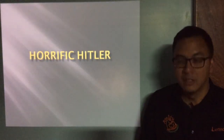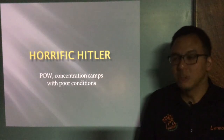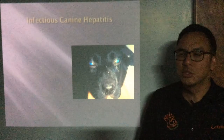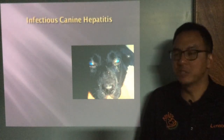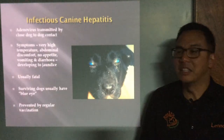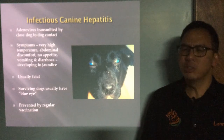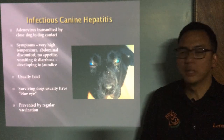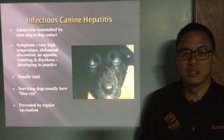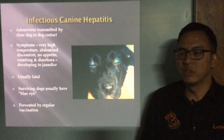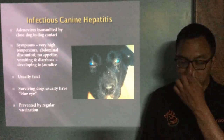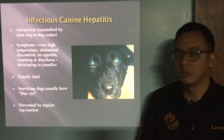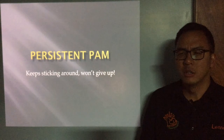Horrific Hitler — imagine prisoners of war in poor conditions. We're talking about infectious canine hepatitis. Hepatitis means inflammation of the liver, and it's an adenovirus transmitted by close contact. Symptoms include very high temperature, abdominal discomfort, no appetite, vomiting and diarrhea, developing into jaundice — where the skin turns yellow. It is usually fatal. Surviving dogs often have blue eyes, as shown in the picture. It's prevented by regular vaccination, as there is no specific treatment, only supportive care.